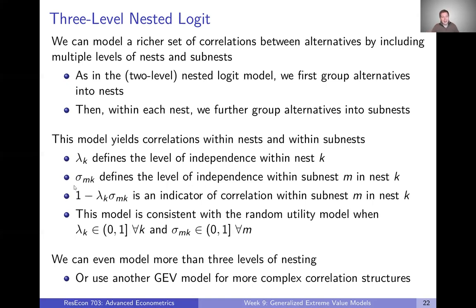We also have sigma_mk, which defines the level of independence within sub-nest m inside nest k. So one minus lambda_k gives us an indicator of correlation for alternatives in the same nest but different sub-nests, whereas one minus lambda times sigma gives us an indicator of correlation within sub-nest m in nest k. You can have three different sets of correlations: within the same sub-nest, within the same nest but different sub-nests, and no correlation if things are in completely different nests.